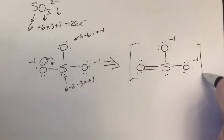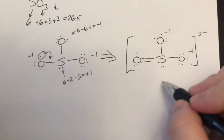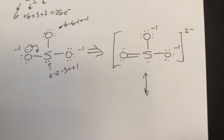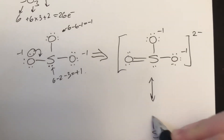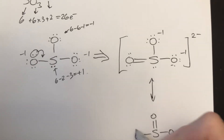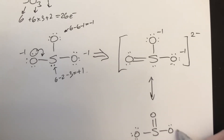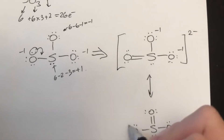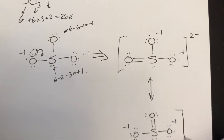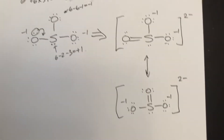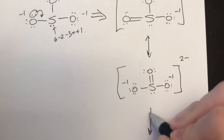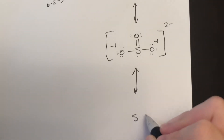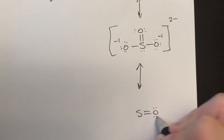We got rid of a bunch of charges. Because there are three equivalent spots, all three arrangements are resonance structures. On the exam, if I ask you to draw all the resonance structures, I would want you to draw all possible options. If I just ask you to draw the Lewis structure, pick one of the three and draw it — we're assuming all three are equivalent.